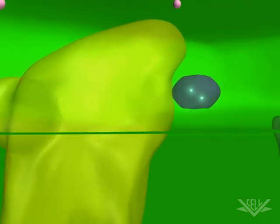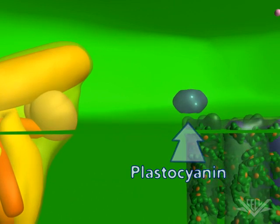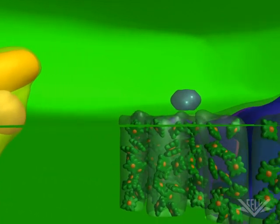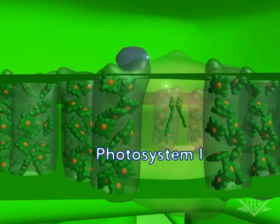The electrons are next transferred to plastocyanin, another mobile carrier. Next, the electrons are transferred from plastocyanin to the photosystem I complex.